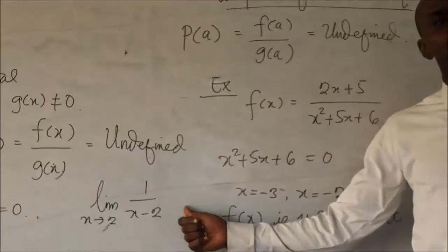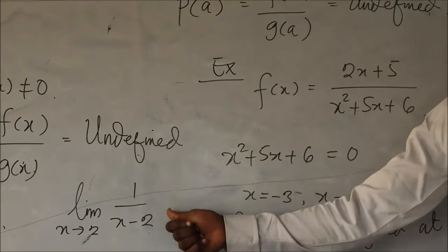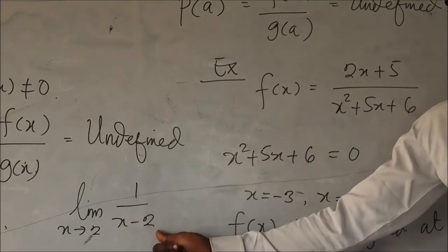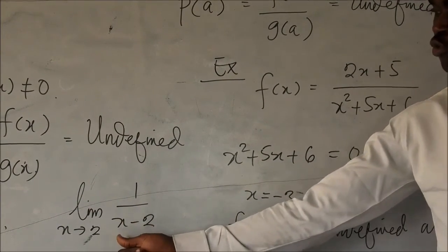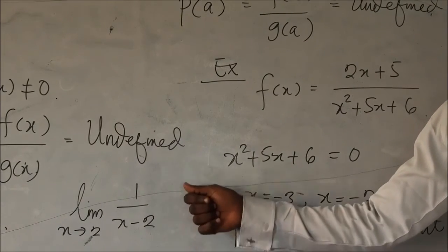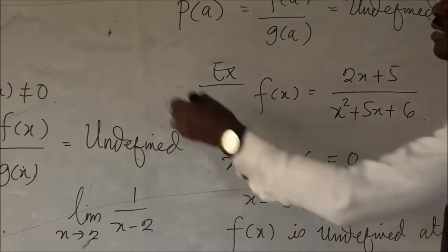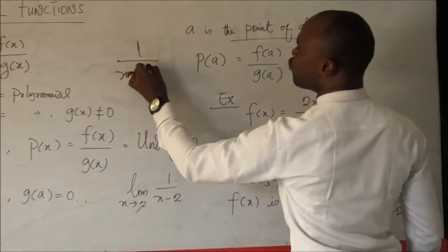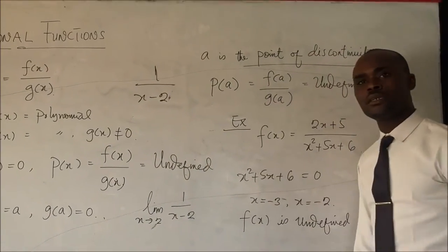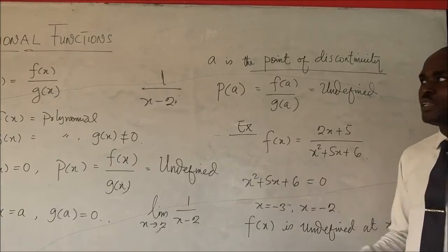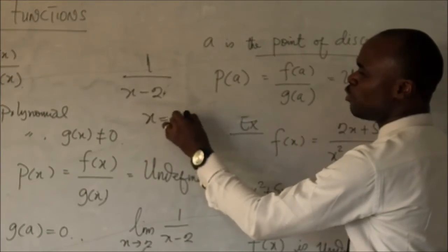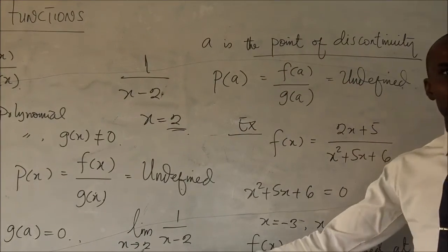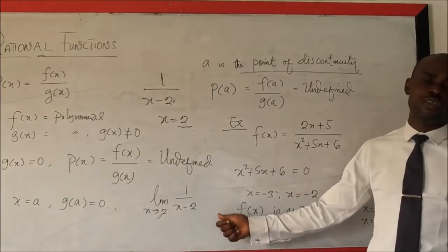You see this is going to be equals to infinity. Why? Because 1 over 0. But the function here, 1 over x minus 2, is not defined at the point x equals 2. Not defined at this point. But when you find the limit as x tends to 2 is going to be equals to infinity.